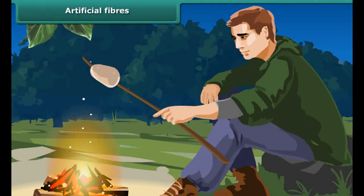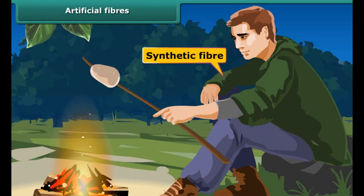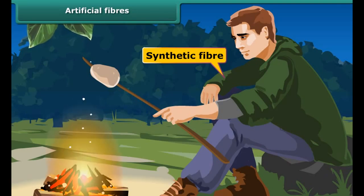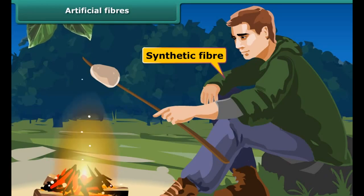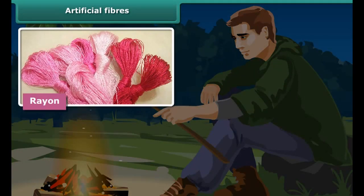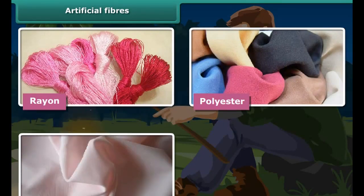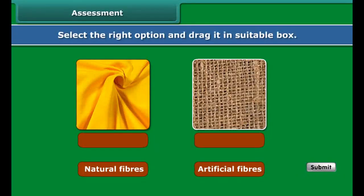Artificial fibers: You might have heard that we should not wear synthetic clothes while working near fire. These clothes have yarns made of man-made artificial fibers, which catch fire very easily. Some examples of synthetic fibers are rayon, polyester, nylon, and terylene.